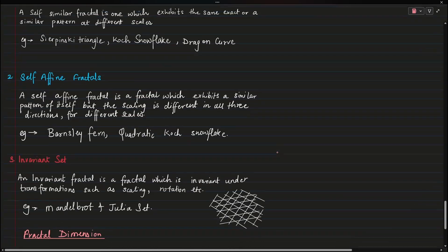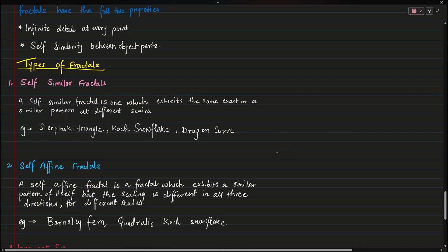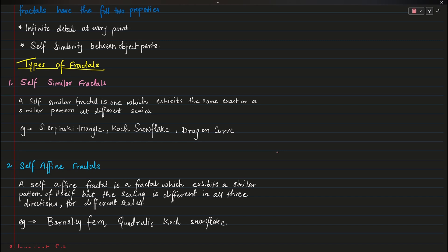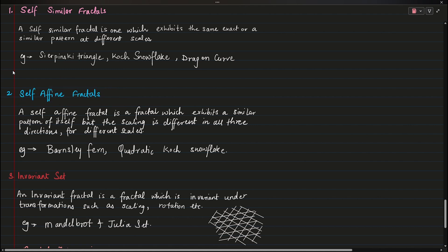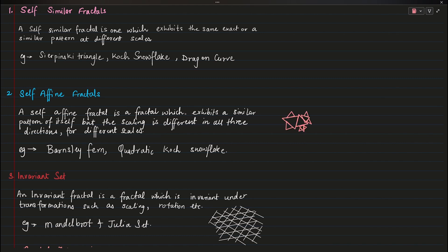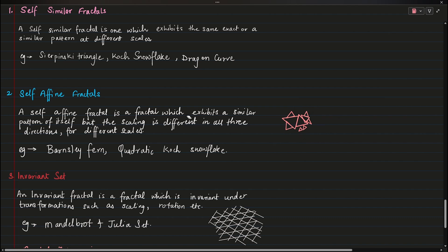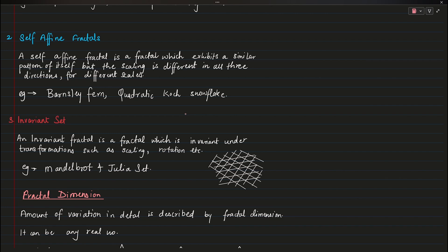There are three types of fractals. First, self-similar fractals, where the exact same pattern repeats — the Koch snowflake is an example of this. Second, self-affined fractals, which exhibit a similar pattern but the scaling is different in all three dimensions. They are invariant in all directions, meaning no matter what transformation — translation, scaling, or rotation — is applied, the shape is preserved. The Mandelbrot and Julia sets are good examples.